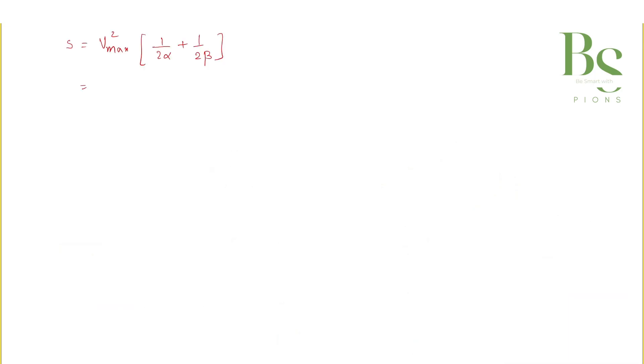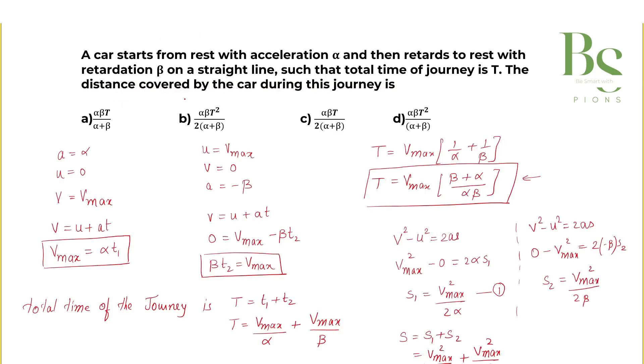So V_max squared will be, I am taking 2 also common here, V_max squared divided by 2, this will become beta plus alpha whole divided by alpha beta cross multiplication. And now let's write V_max value.